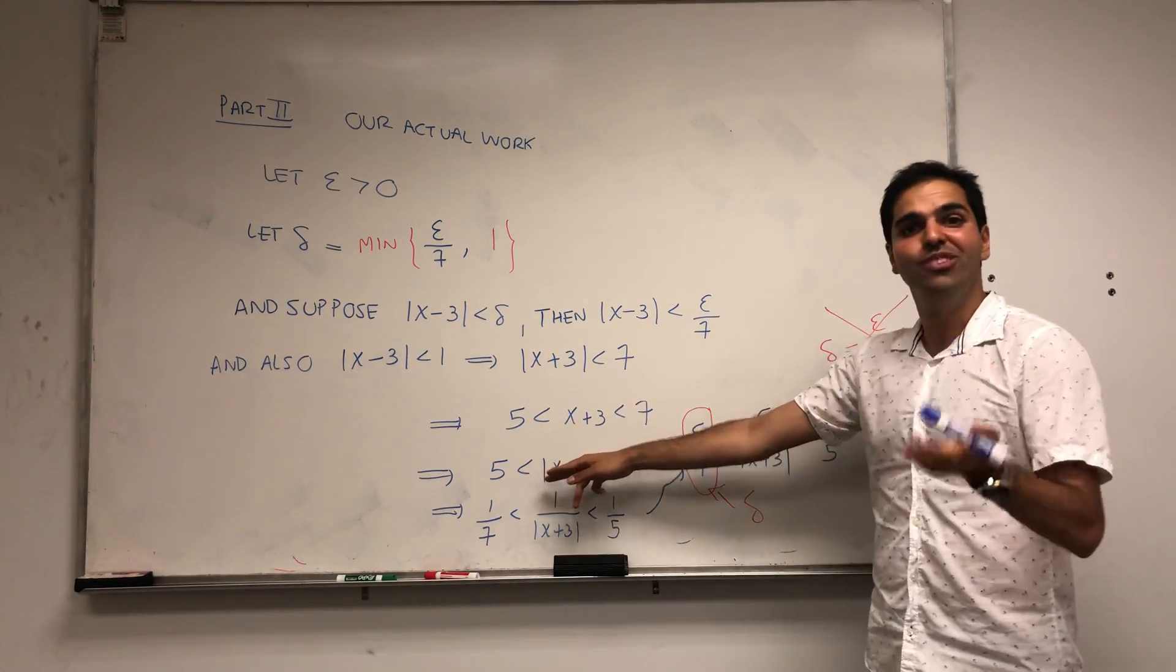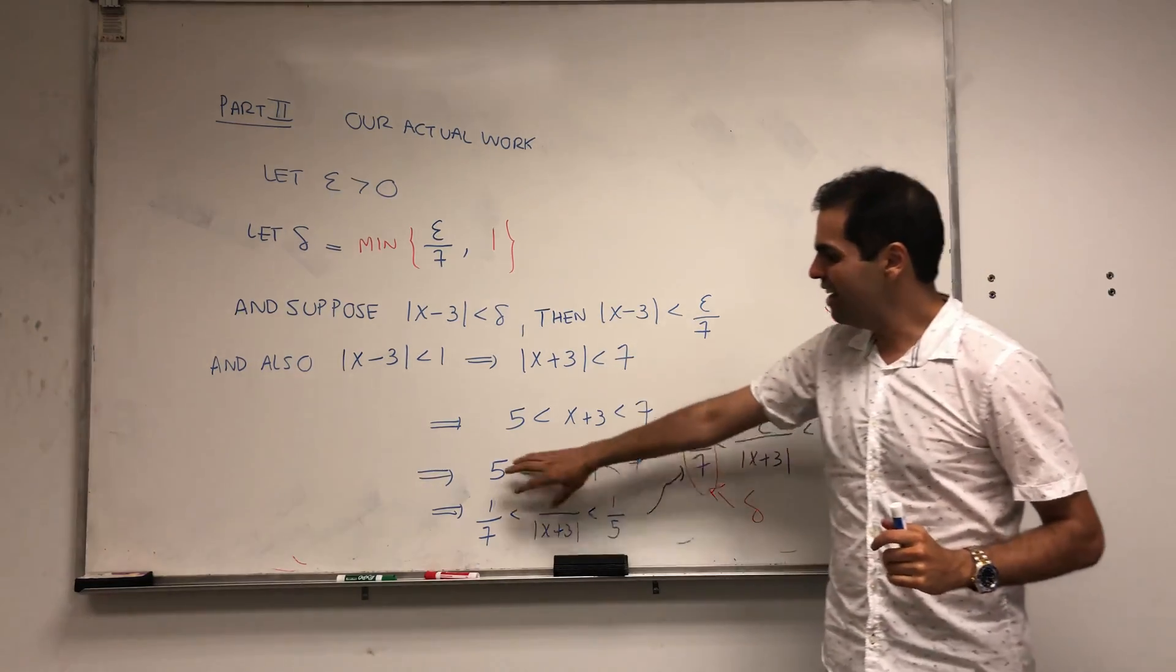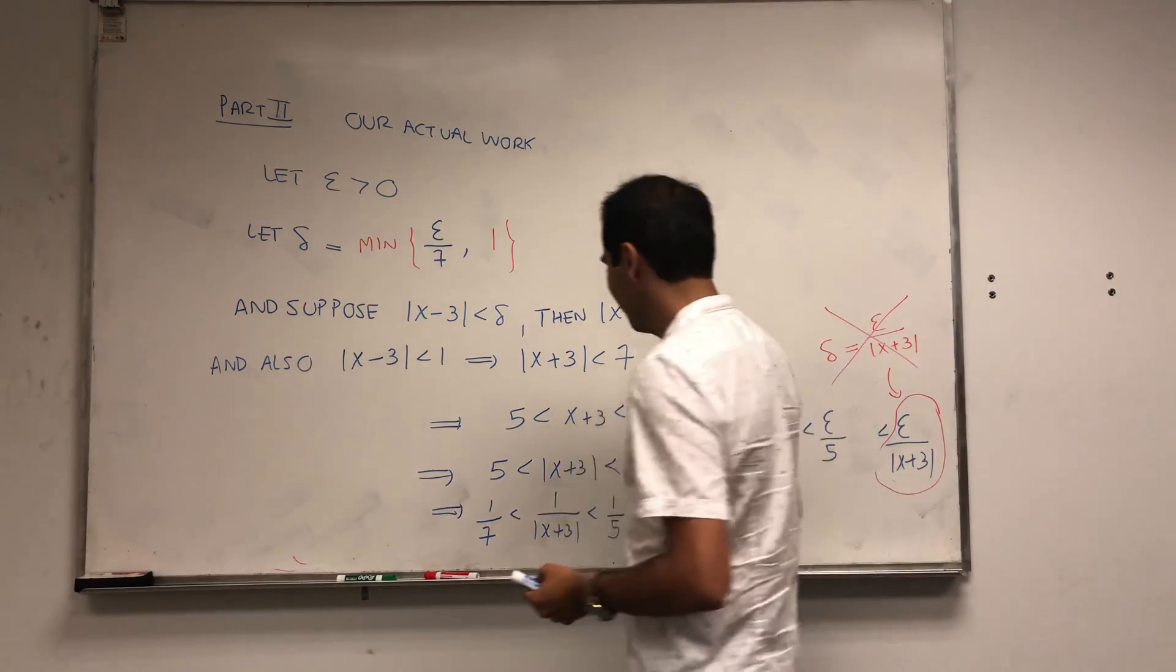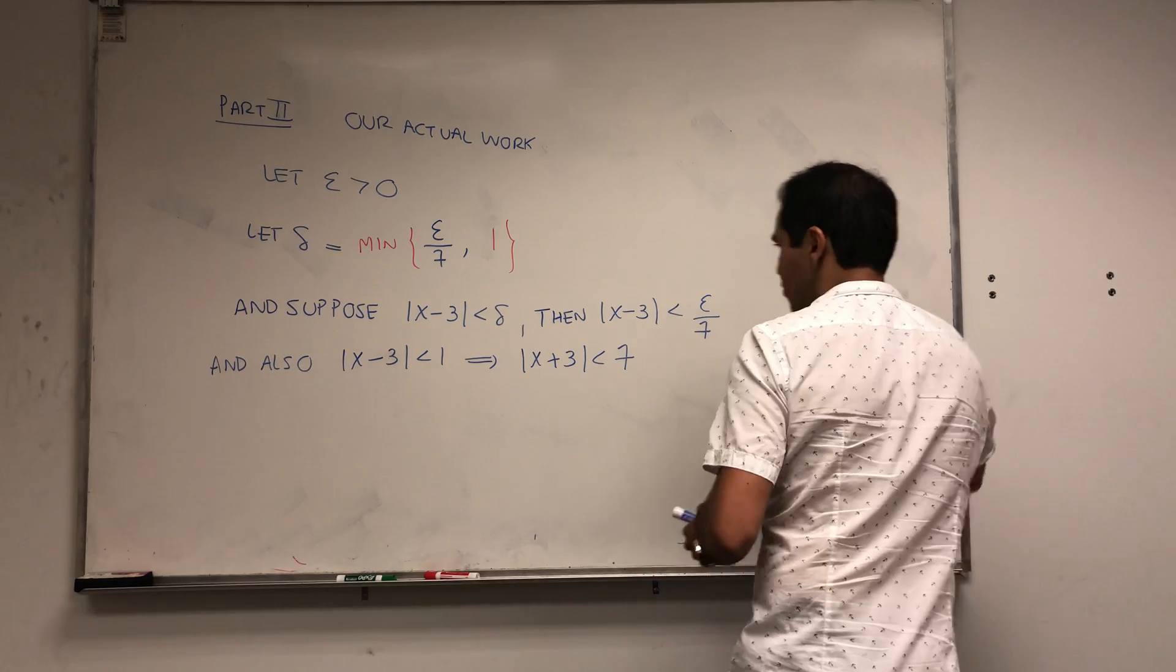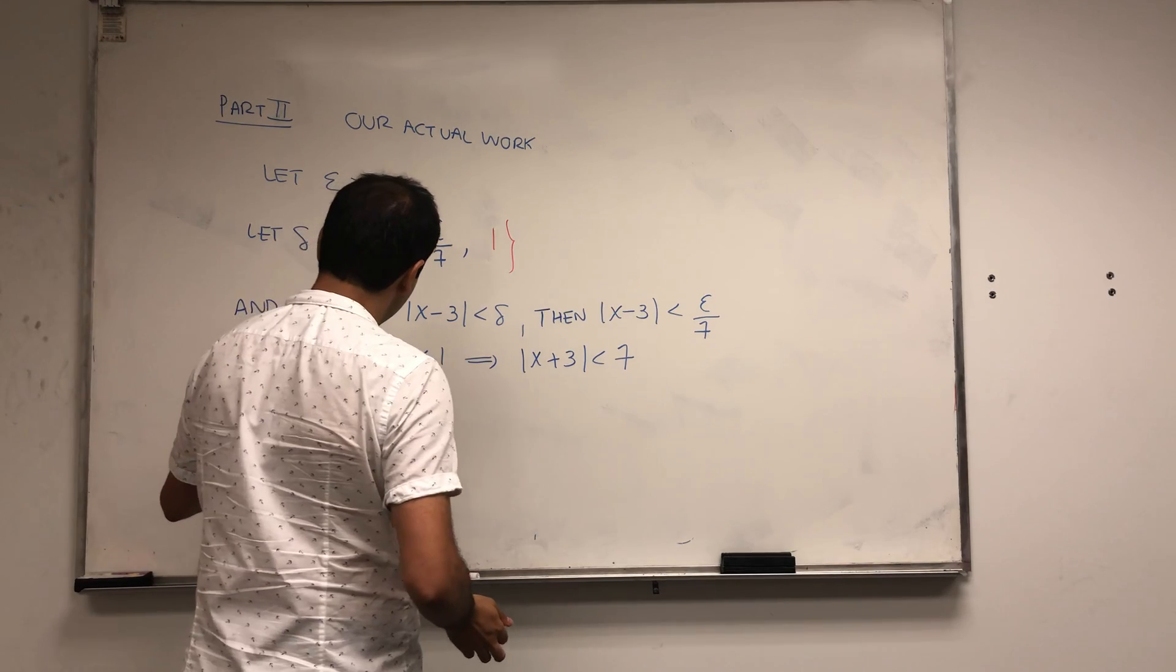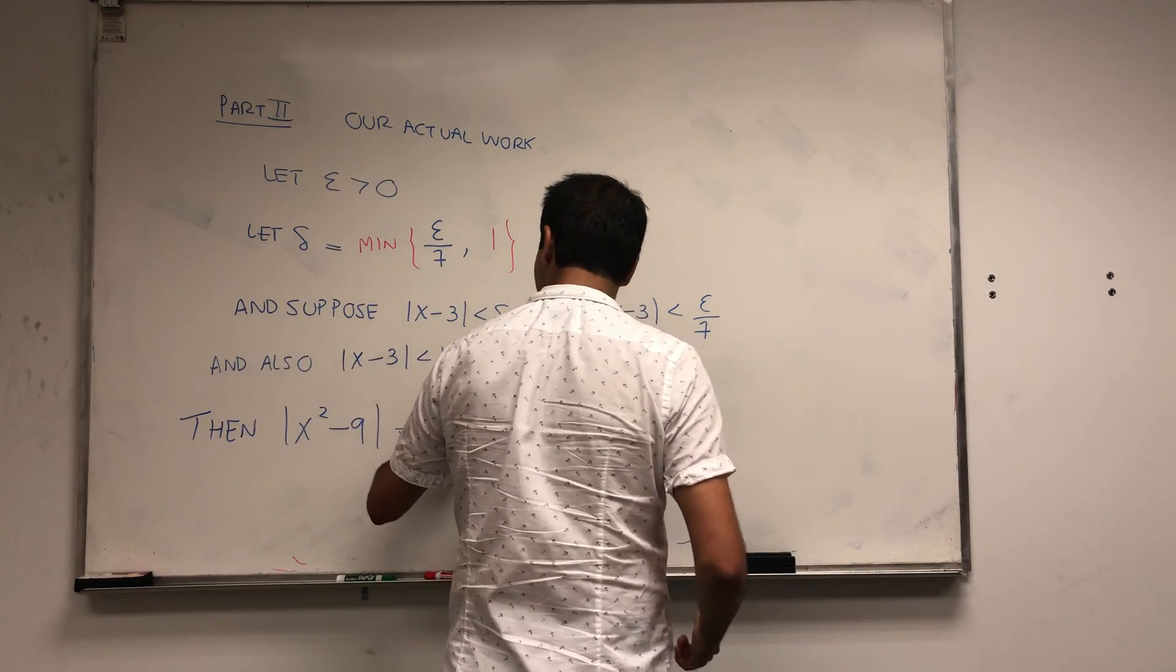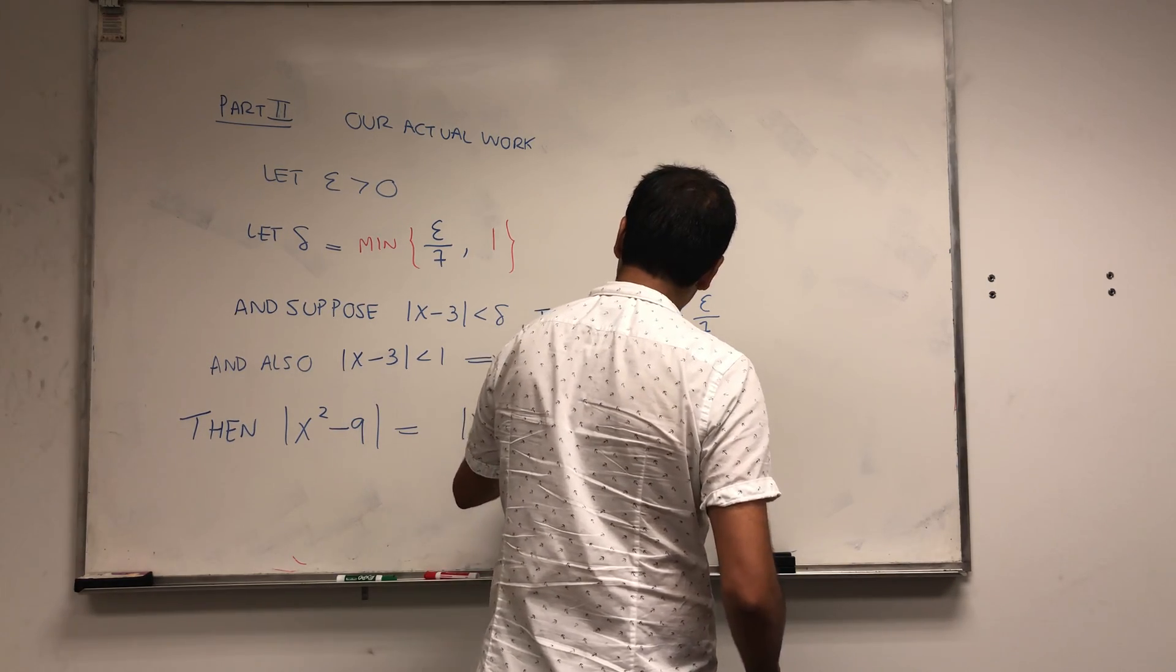Of course if you want you can redo the work, but we don't have to because we've already done this. Here we don't really care about the 5 because we want less than. Then let's see what we have. Now let's look at our difference of outputs. x squared minus 9, you've already calculated this to be x minus 3 times x plus 3.